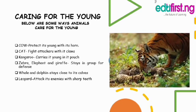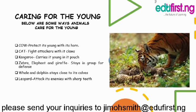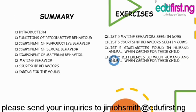Caring for the young: Below are some ways animals care for the young. The cow protects its young with its horns. Cats fight attackers with their claws. The kangaroo carries its young in its pouch. Zebras, elephants, and giraffes stay in groups for defense. The whale and dolphin stay close to their calves. The leopard attacks its enemies with sharp teeth.